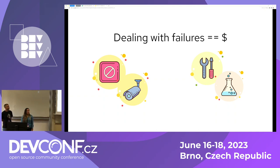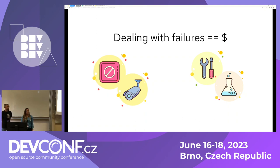Another example: you try to deploy a new version of your software and late in the process you notice some failed dependencies. You can use end-to-end unit tests to detect that sooner, CI/CD, or staging environments — or all three if you really want to prevent these kinds of failures.